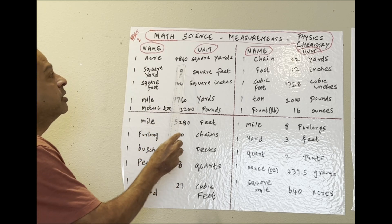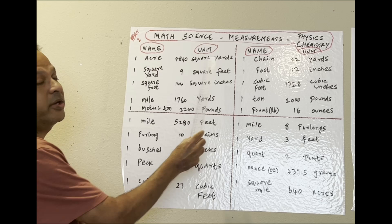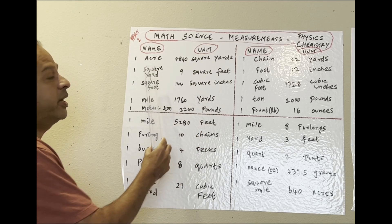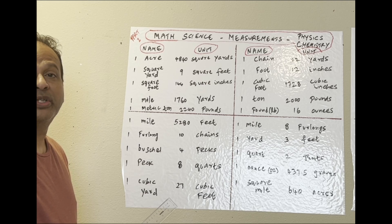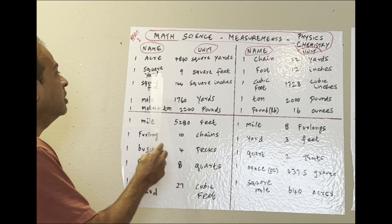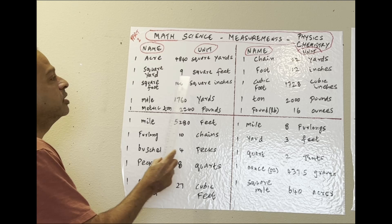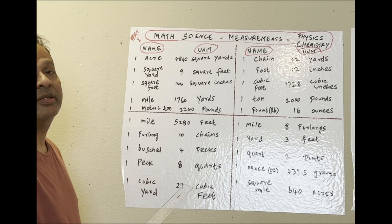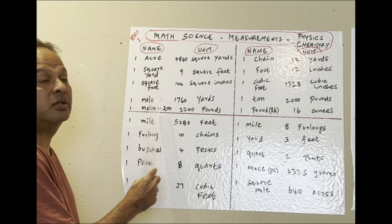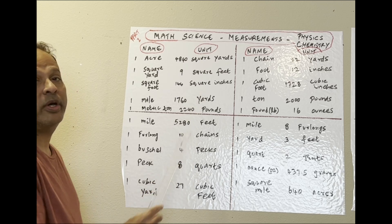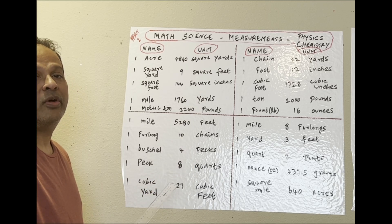One acre: 4,840 square yards. Acre is used in real estate, measuring residential and commercial properties. One square yard: nine square feet. That's for measuring homes and area of real estates. One square foot: 144 square inches, if you want to measure inside a small room or medium-sized rooms.